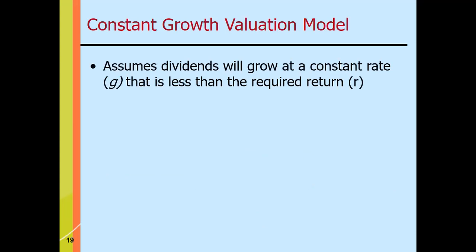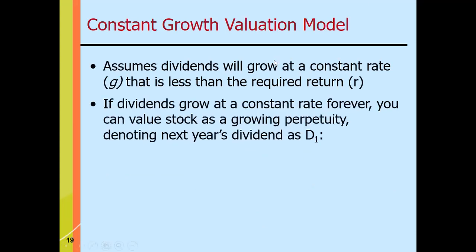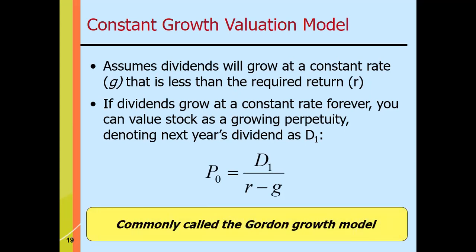What about the constant growth valuation model? In this case, there is a constant rate of growth, which is normally less than the required return R. If dividends grow at a constant rate forever, we can value the stock as a growing perpetuity. The formula is P sub zero equals D sub one over (R minus G). This formula is called the Gordon growth model.